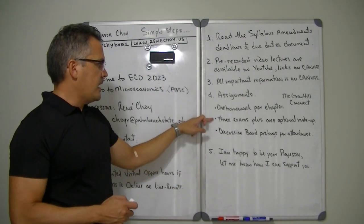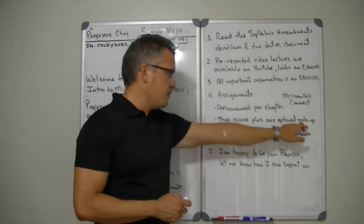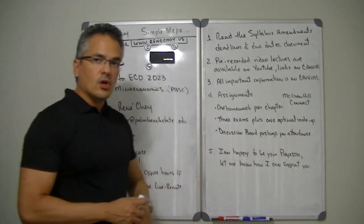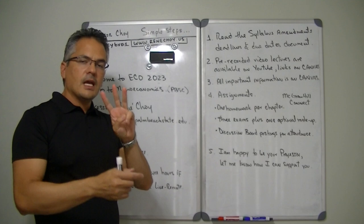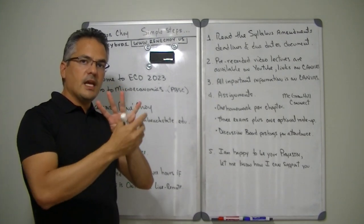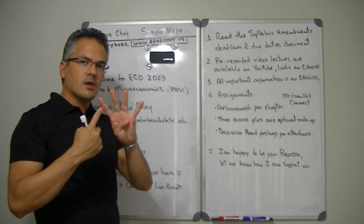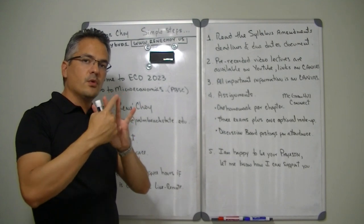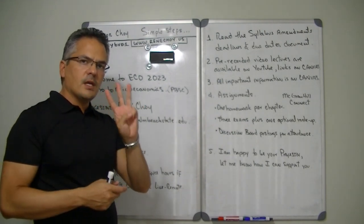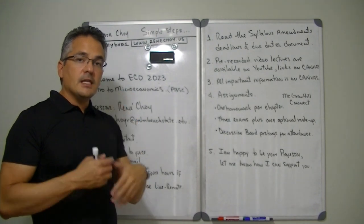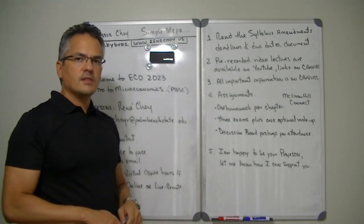We're also going to have three exams plus one optional makeup test. Three exams are the ones that are going to give you a grade in the class. There is a fourth one in case you miss one of those three exams, or in case you want to improve a grade on one of those three exams. So the fourth exam is optional, and it's what we call a drop the lowest score test.